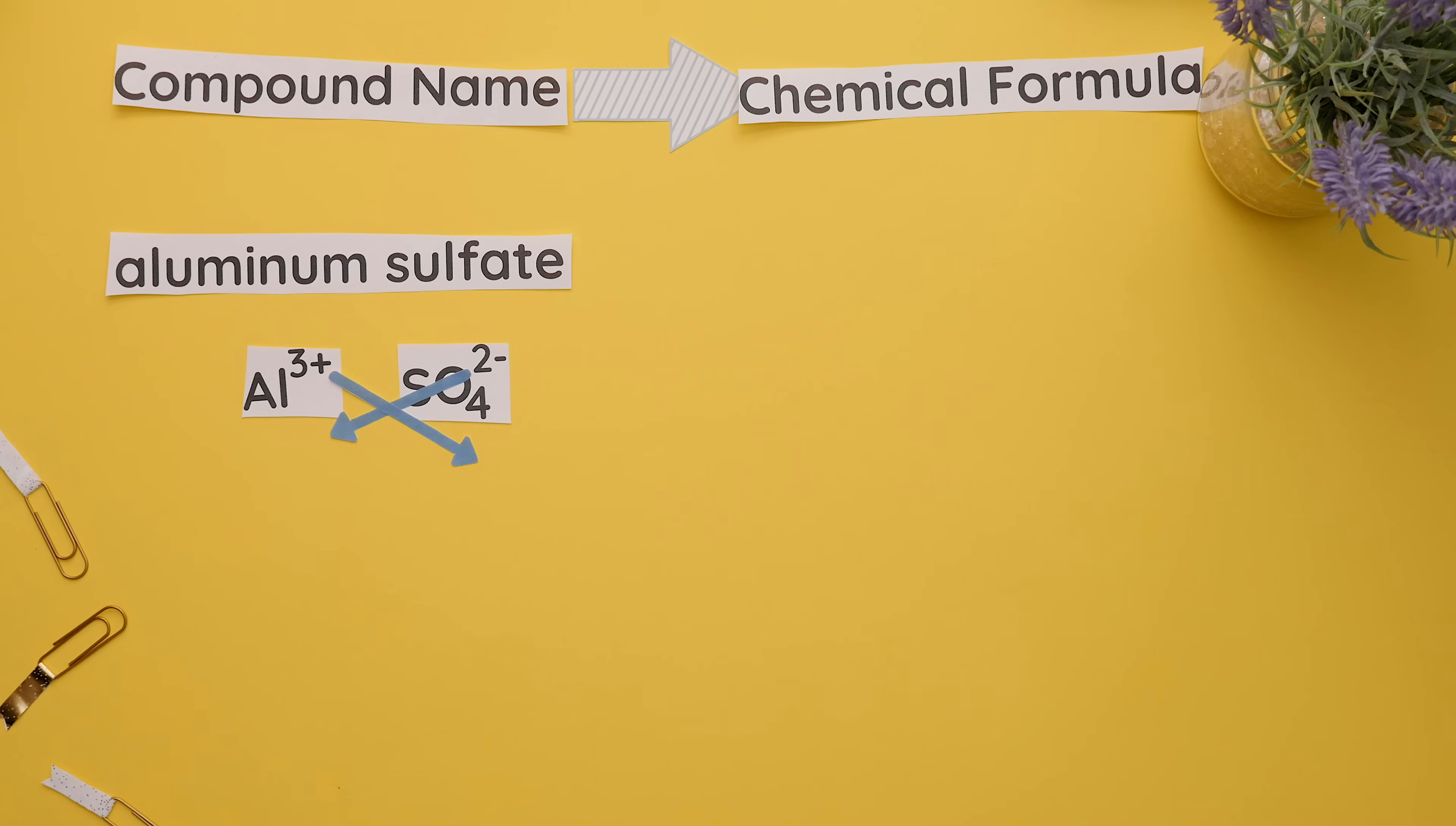Note: whenever a polyatomic ion requires a subscript, we will place the entire polyatomic ion in parentheses with the added subscript outside of the parentheses. So this is our chemical formula.